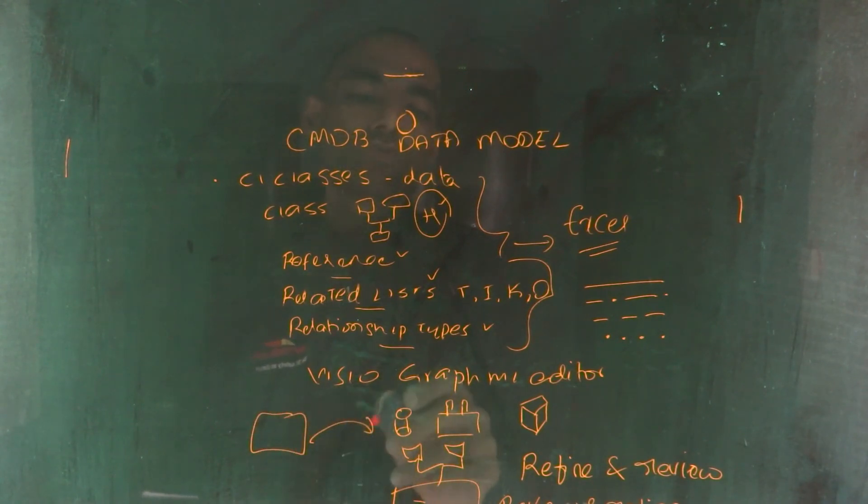And how it has all these components on them, like the references, relationship types and so on. And that way you're keeping the data model always up to date. So that is how you can build a CMDB data model.